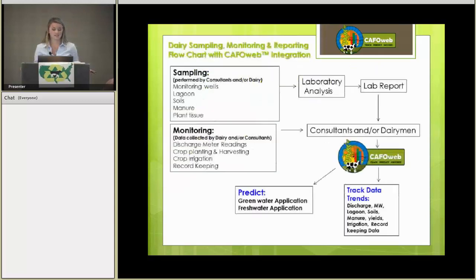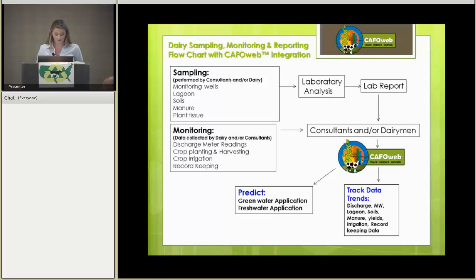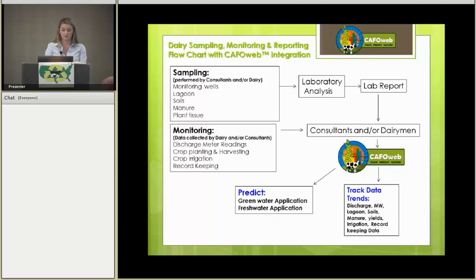This is the dairy sampling and monitoring reporting flowchart, and I'm going to tell you about how CAFO Web can be integrated into this system. Currently, the data is collected from sampling and monitoring and goes into a report sent to the dairy farmer. That report is almost impossible to analyze and ends up in a filing cabinet, most of the time never looked at again. Now with CAFO Web, there's sampling and monitoring performed by the dairymen and consultants. It's sent to the lab for analysis, and the lab report is sent to the dairymen and consultants. From here, this data is entered into CAFO Web.